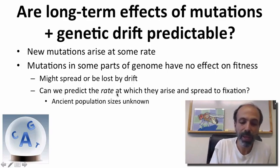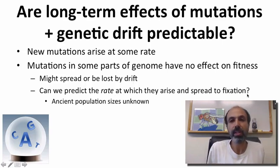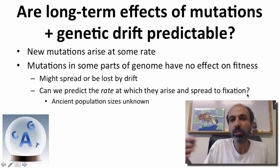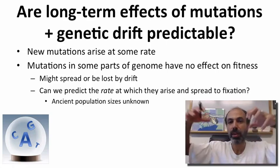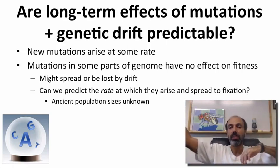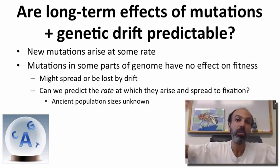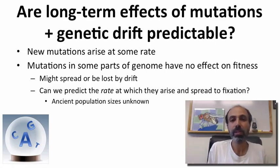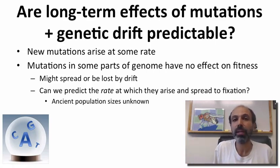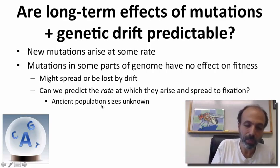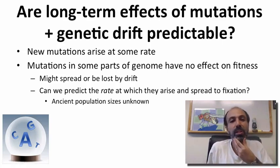The question is: can we predict the rate at which neutral mutations both arise and spread to fixation? This is what will ultimately lead to differences between species — a new mutation arises, spreads in one lineage, and gets to 100%, making that lineage different from other lineages. Can we determine this rate at which they arise and spread? The tricky part is that ancient population sizes are unknown, so it seems like this would be very challenging. Let's break this up into pieces.